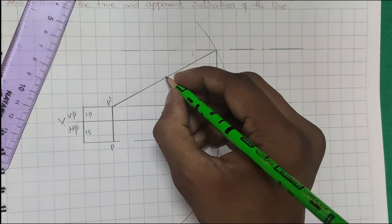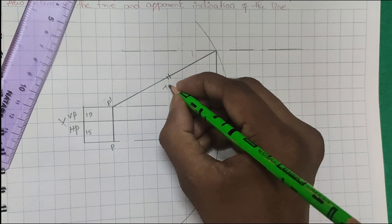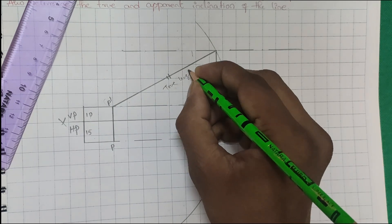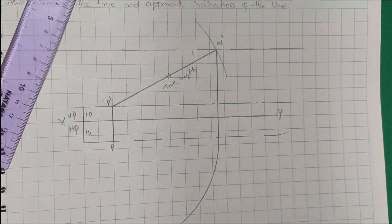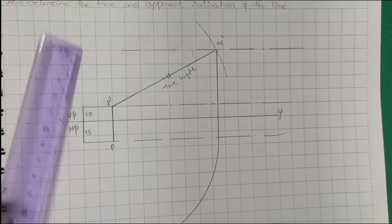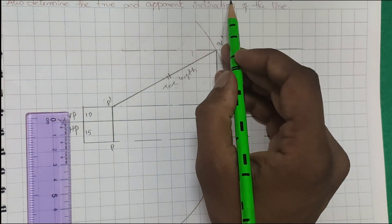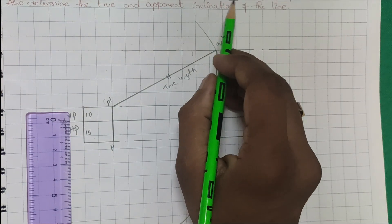This is the true length. This is your Q dash. Next, in the front view you are given 80mm. 75mm is the top view and 80mm is the front view.